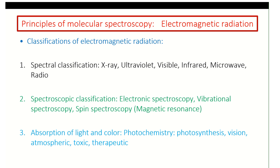There is a direct proportionality between energy and frequency, and an inverse proportionality with wavelength. We can classify this radiation — from X-ray all the way through to radio — spectroscopically. We're looking at electronic spectrum, vibration spectrum, and spin, with applications in absorption spectroscopy for chemistry, synthesis, and therapeutics.